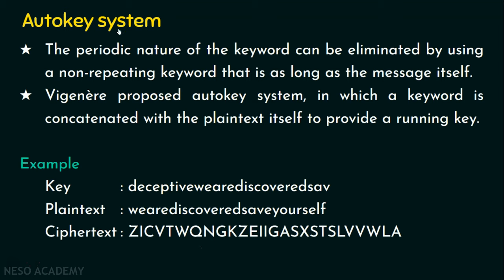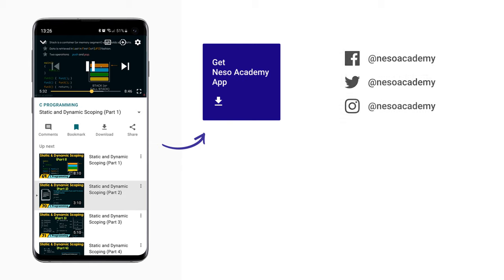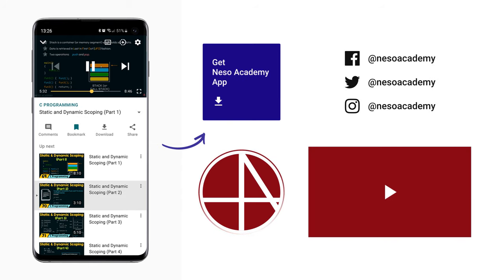This auto key system offers better security compared to the simple Vigenère cipher. We are eliminating the repeating keywords by introducing a non-repeating keyword — keyword 'deceptive' concatenated with the message itself. I hope you now understand the polyalphabetic substitution cipher, the working of Vigenère cipher, the cryptanalysis on Vigenère cipher, and the auto key system. Thank you for watching.